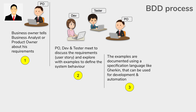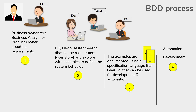Once they agree upon the examples, these examples are documented using a specification language like Gherkin. This converts the examples into documentation that can be used by all teams — both technical and business. The same documents can be used for developing the code and creating automation test cases. After this stage, the documented examples are used for creating automation test cases, which further guides the development.